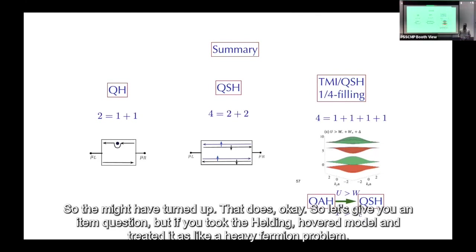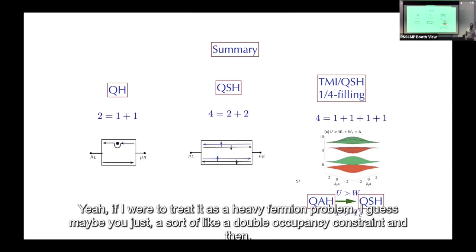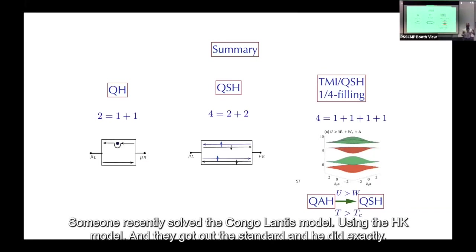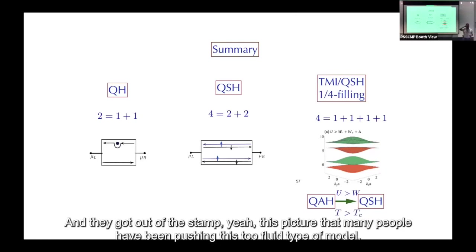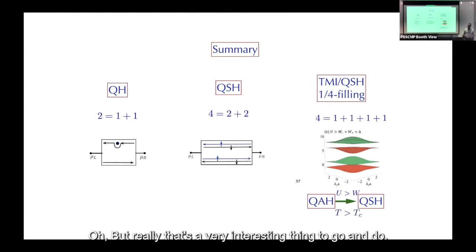Q: If you took the Haldane-Hubbard model and treated it like a heavy fermion problem, do you also get topological bands? A: Someone recently solved the Kondo lattice model using the HK model exactly and got out the standard two-fluid picture. We have not done that — we've been focused on topology rather than heavy fermion physics, but it's a very interesting direction to pursue.